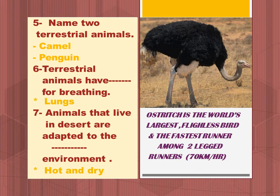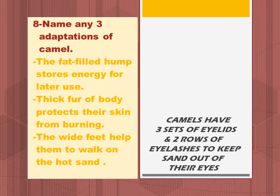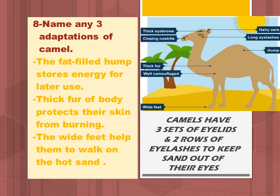Animals that live in the desert are adapted to the high temperature, coat, and dry conditions. Named any three adaptations of camels: the fat in the hump stores energy for later use. The thick fur or coat protects their skin. The wide feet help them to walk on the hot sand.